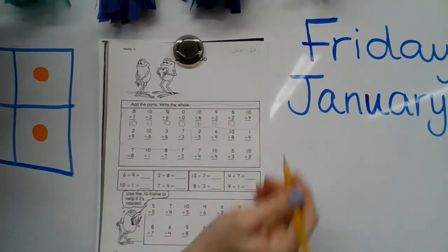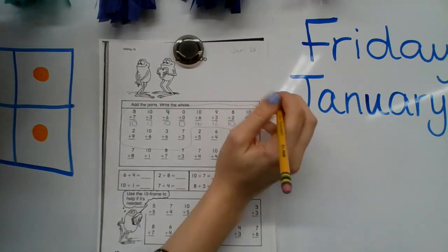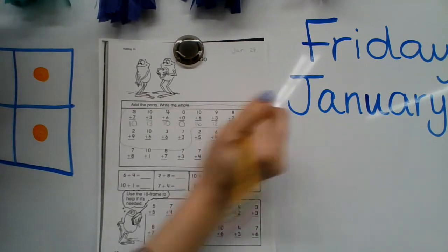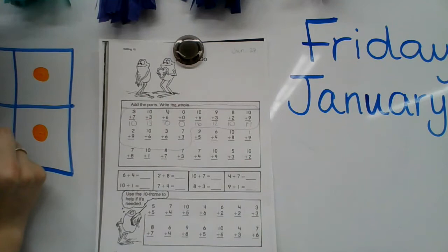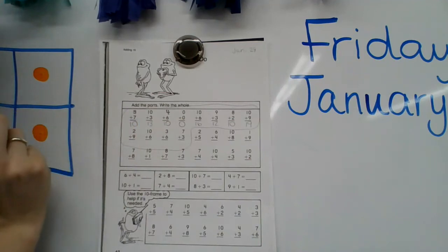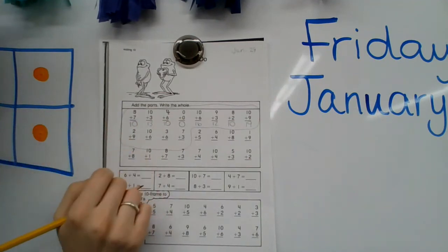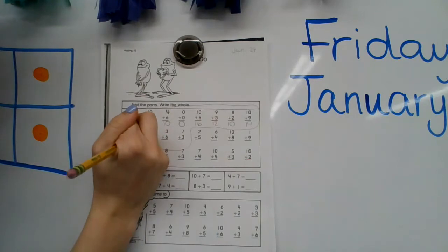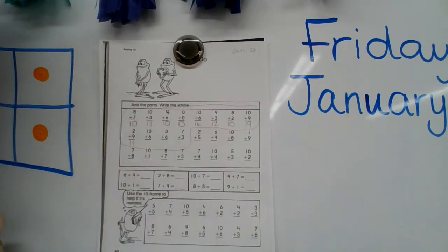10 plus 9. There's that 10 trick again. You can just put the 9 instead of the 0. So 1, 9, 19. Quick, quick. 2 plus 9. Let's start with the big number 9 and let's count up. 9, 10, 11. 11 is your answer.